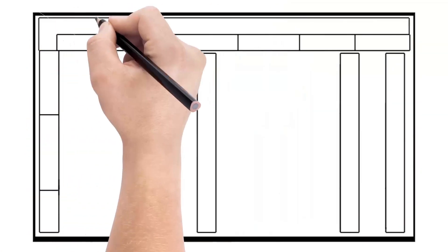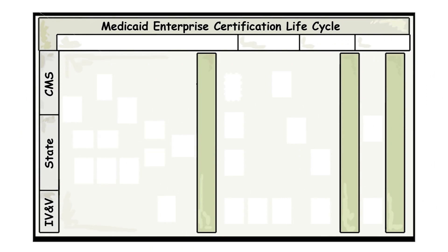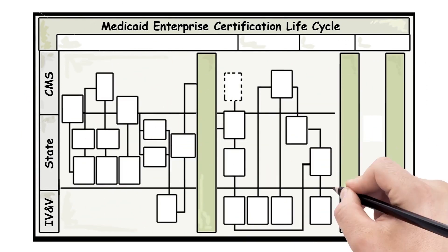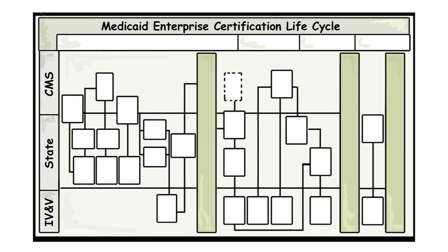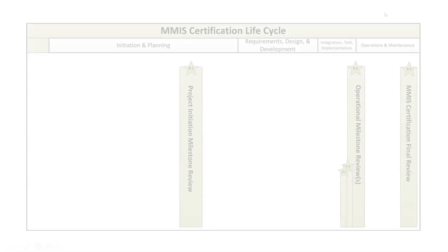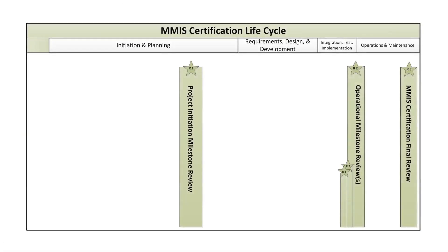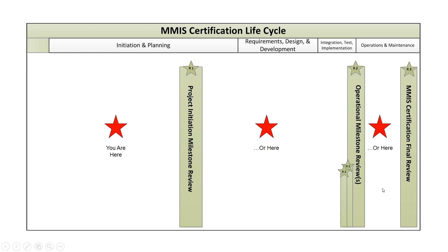Now that we've seen the toolkit components, let's go to section 3 where we'll look at key activities in the new lifecycle and consider how a state can transition to the new process. In the toolkit, the new certification lifecycle is shown from beginning to end, but many states are already in the middle of upgrading their systems. Not to worry — a state that has already begun its journey will work with its regional office to determine at what phase it will transition into the new process. We will give an example after explaining how the new lifecycle accommodates different types of modular development.